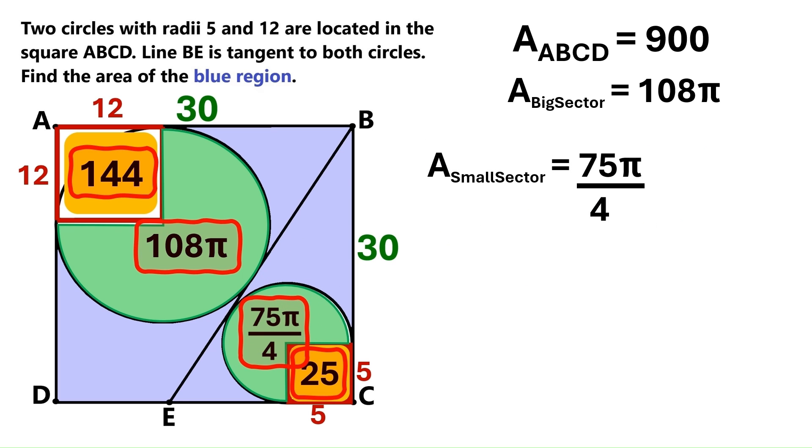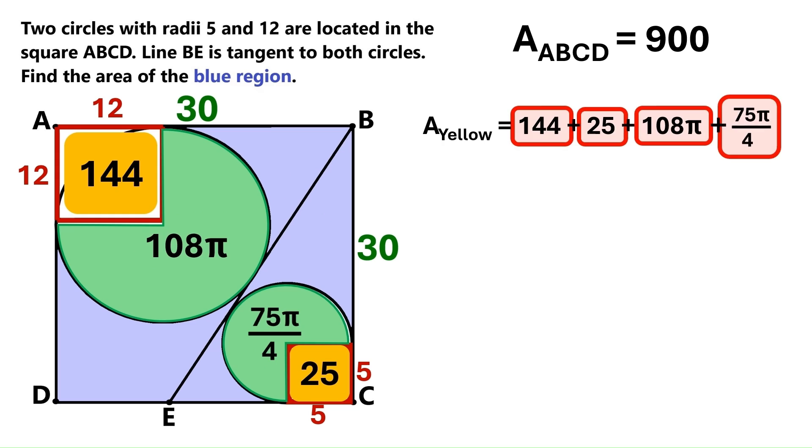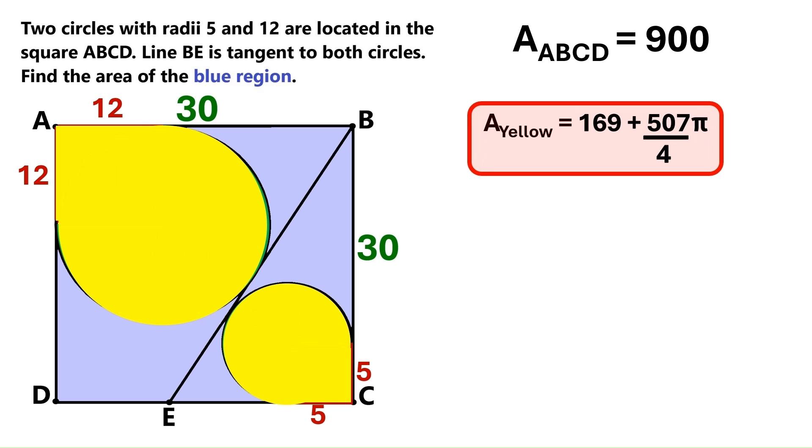Now we've got 4 separate areas. And if we combine them, we get this big yellow region. So let's take these 4 areas and add them up to get the yellow region's area. And it's 169 plus 507 pi over 4.